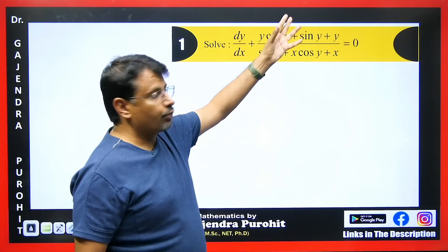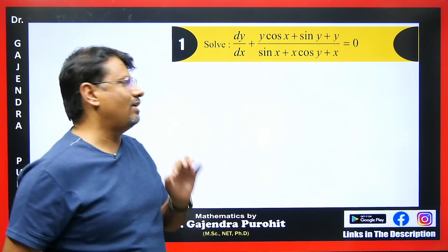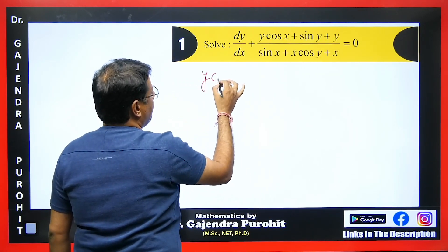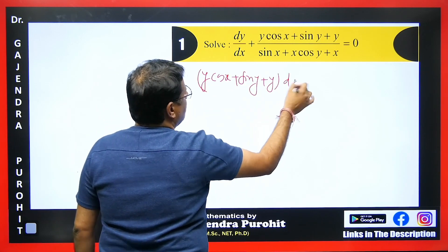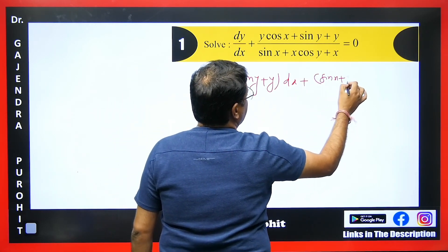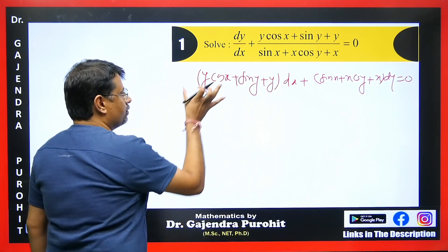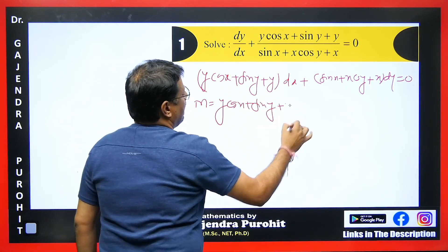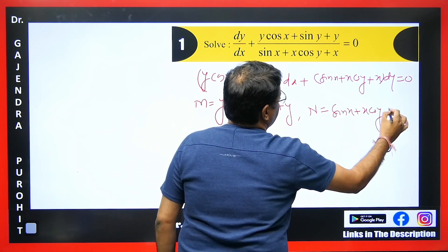Look at this question — it might seem difficult and time-consuming, but it is easy. You just have to check if it is exact. Multiply the dx term on one side and dy on the other. We get M = y cos x + sin y + y, and N = sin x + x cos y + x.